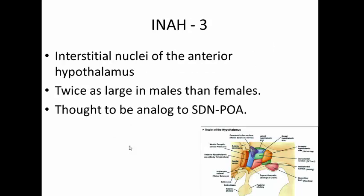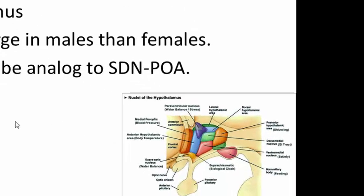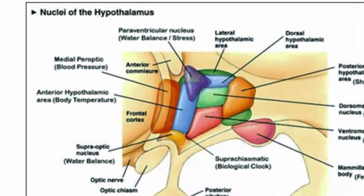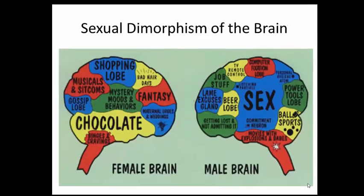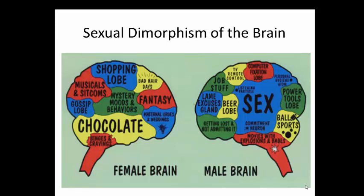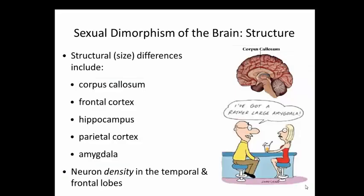Humans have a structure called the interstitial nucleus of the anterior hypothalamus, which some think is analogous to the sexual dimorphic nucleus. There are also some differences between the male and female brain: the corpus callosum — the part connecting the two sides of the brain — is a little larger in females. The frontal cortex can be somewhat lateralized, as can the hippocampus and parietal cortex. The amygdala also differs — the number of connections to and from the amygdala can differ between males and females.